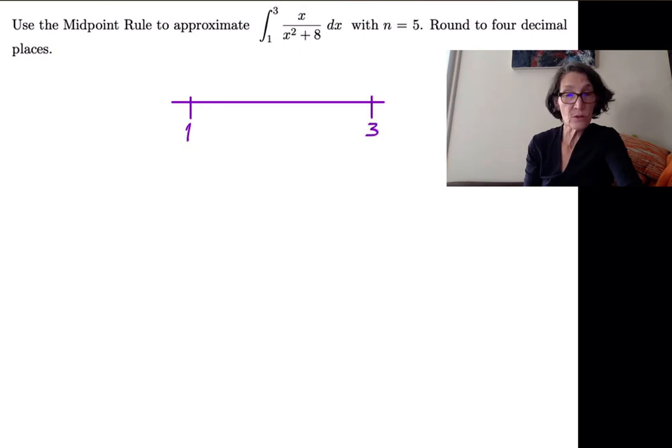So let's look at what that looks like. Here's the interval from 1 to 3, and we're chopping it up into five subintervals. Let's find the width of each subinterval. So delta x is the width of the big interval, 3 minus 1, divided by the number of subintervals we have. So it's going to be two-fifths. So each of those subintervals has width two-fifths.